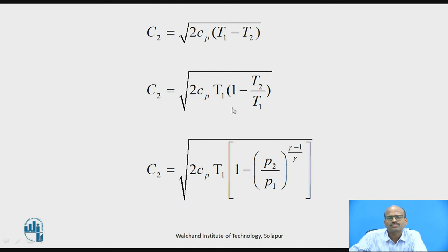Now I can take T1 common. So equation will become C2 equals square root of 2 Cp T1 in the bracket 1 minus T2 by T1. Try to recall the Cp of air. If not given, we are assuming 1.005. Next equation is this could be replaced by P2 by P1 because flow through carburetor is once again assumed to be isentropic. In that case, we can replace T2 by T1 by P2 by P1 raised to gamma minus 1 by gamma.